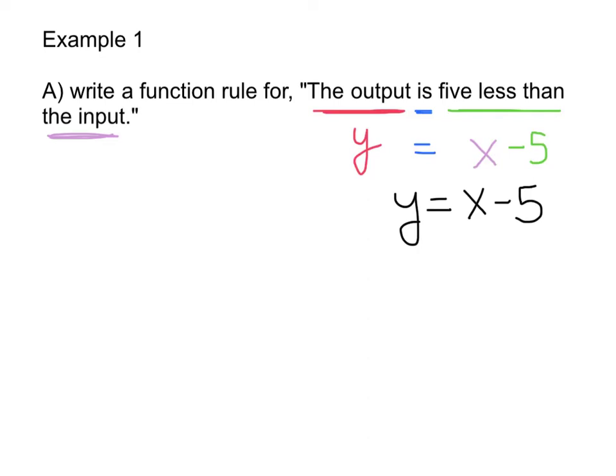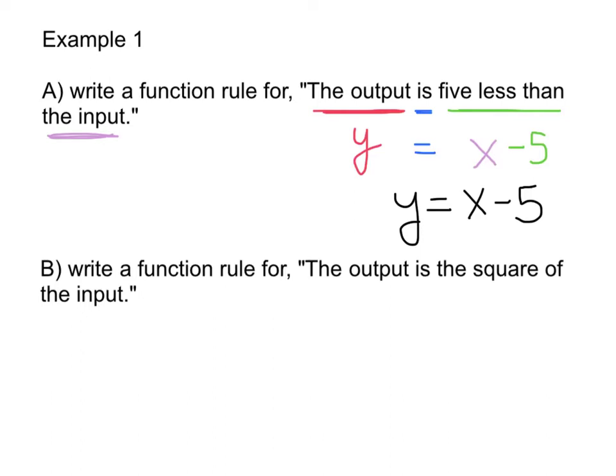Part b says, write a function rule for the output is the square of the input. Once again, we're going to start with the output. The output is y. Is equals. The square of the input. Well, the square is going to be something squared. The input is x. So our equation would be y equals x squared, because the output is the square of the input.